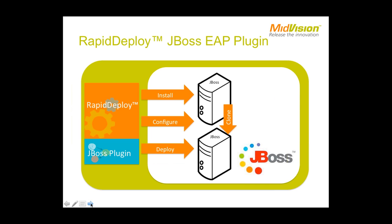With the JBoss EAP plug-in, we've defined a JBoss EAP environment where you can set most of the JBoss settings you would typically specify — such as the server base directory, port offsets, binding addresses, and typical JBoss settings. We've also provided tasks to install, uninstall, deploy applications, deploy configuration, and execute CLI scripts using the standard JBoss CLI tools. The plug-in allows you to install, configure, and deploy in the JBoss environment.